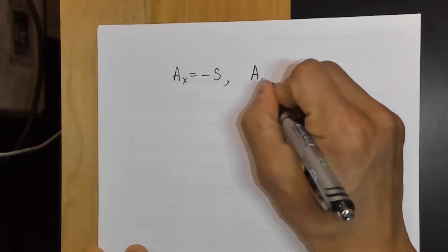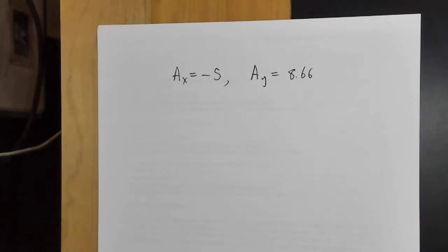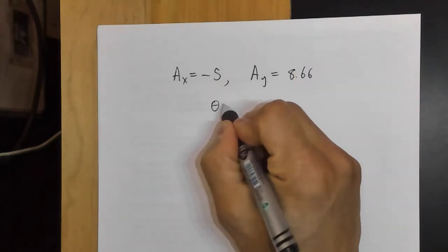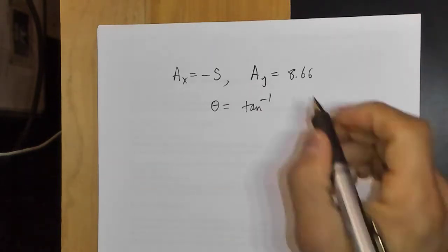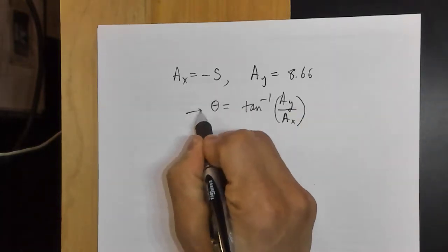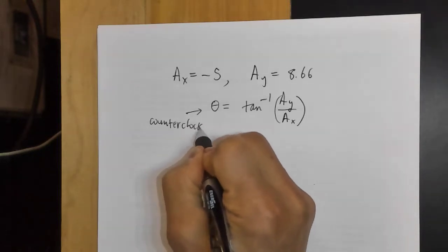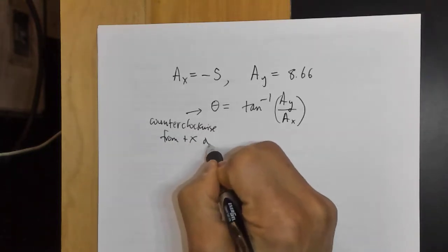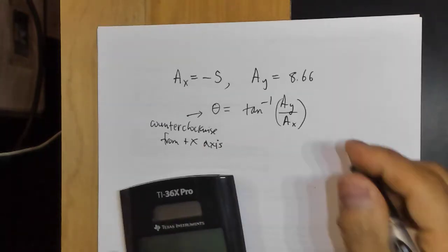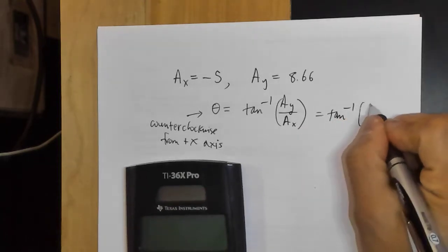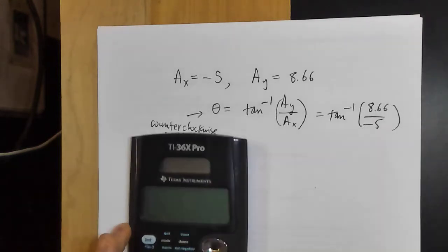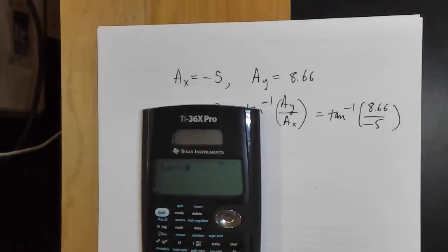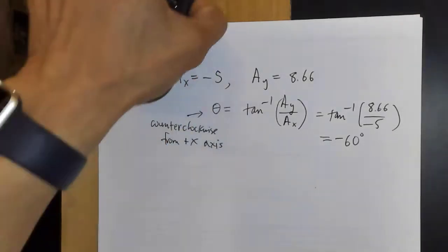Suppose you have a vector where the x-component is -5 and the y-component is 8.66. There's a formula: if you measure the angle counterclockwise from the x-axis, theta equals the inverse tangent (arctangent) of a_y over a_x. This is measured counterclockwise from the positive x-axis. Take the calculator and do 8.66 over -5.